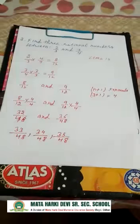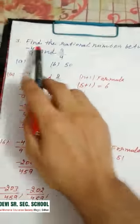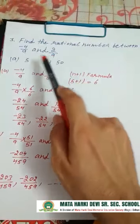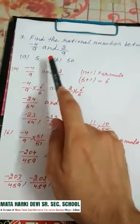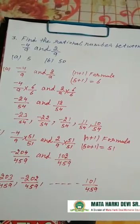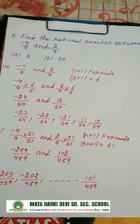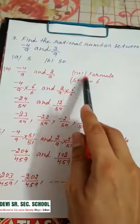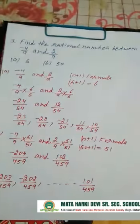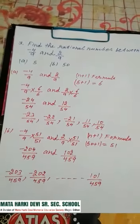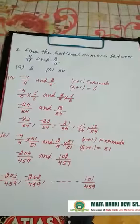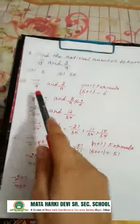Now third sum: Find the rational numbers between minus 4 by 9 and 2 by 9. Part A is 5 numbers and part B is 50 numbers. In this statement, denominators are the same. If denominators are not same, firstly you make the denominators same. Since denominators are already same here, directly apply the n plus 1 formula.